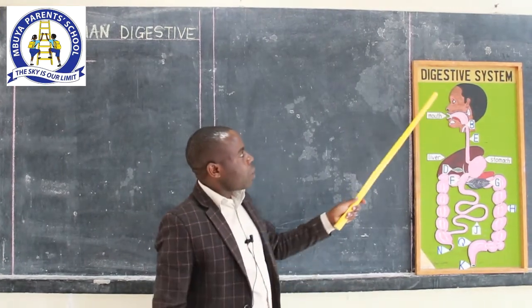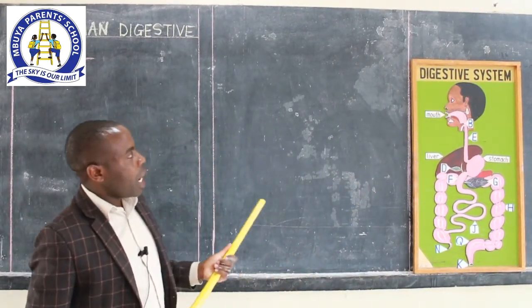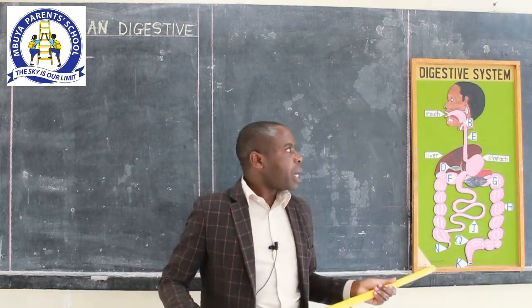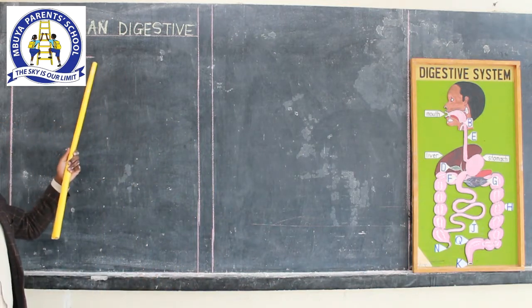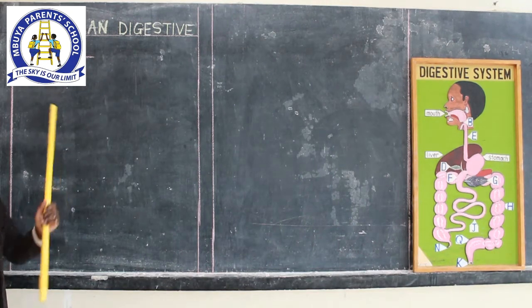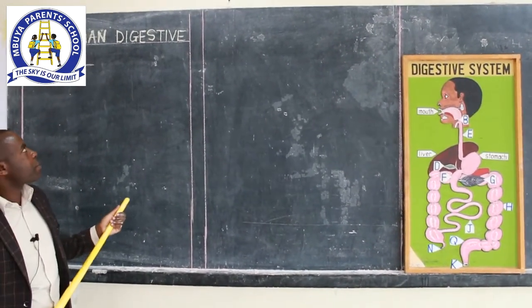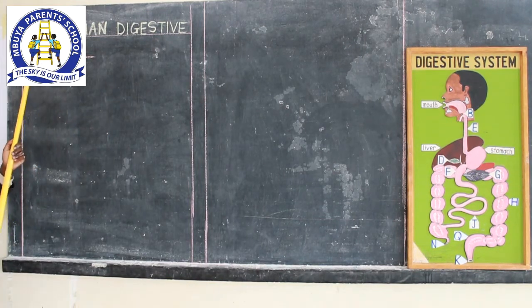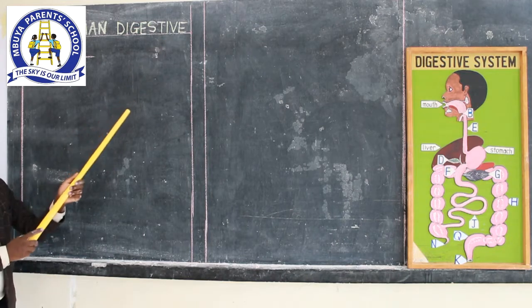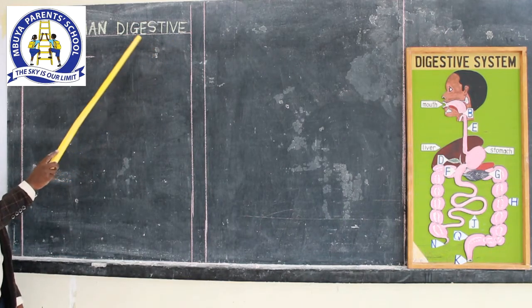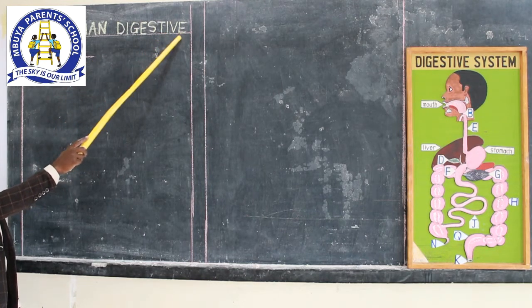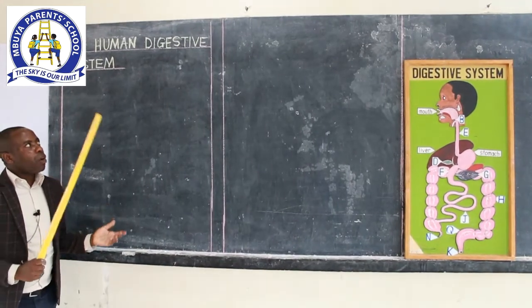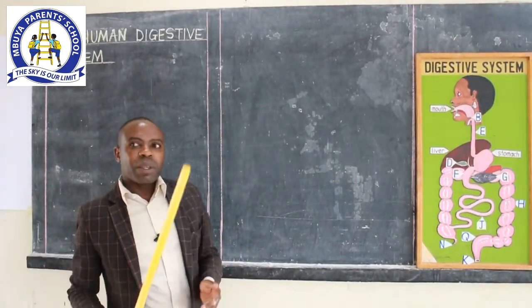We have got the word 'digestive system.' A body system is a group of body organs that work together to perform a specific purpose in the body. The human digestive system is the body system responsible for breaking down food into small particles that can be absorbed by the body. The word 'digestive' comes from the word 'digest,' meaning to break down — in this case, the food that we eat.